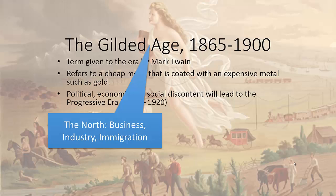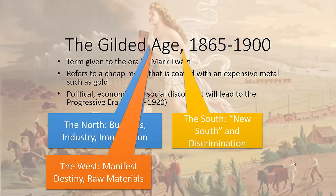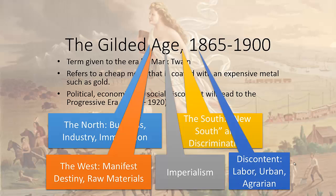We look at five themes when examining the Gilded Age. The North: business, industry, and immigration — we'll talk about that more in Chapter 19. The South: specifically the New South and discrimination, which we touched on at the end of last year with Reconstruction and will be a big theme throughout US2. Today we're focusing on the West — the continuation of Manifest Destiny and the search for raw materials. We'll also cover imperialism and forms of discontent: labor discontent, urban discontent, and agrarian discontent.